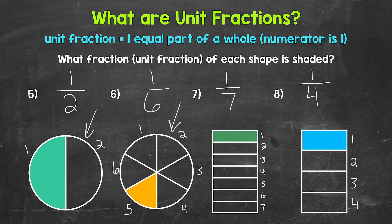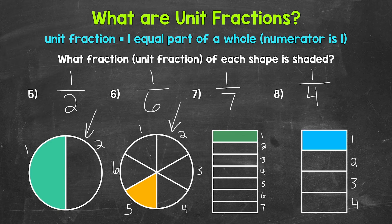For numbers seven and eight, those rectangles are the same size. If we compare those unit fractions, which is greater — one-seventh or one-fourth? We can see that one-fourth is greater — that's a larger shaded part. We can also look at the denominators: whichever denominator is less, that will be the greater unit fraction. Four is less than seven, so one-fourth is greater than one-seventh. For one-fourth, the rectangle was only divided into four parts, so those parts are larger compared to one-seventh, which was divided into seven parts, making those parts smaller.